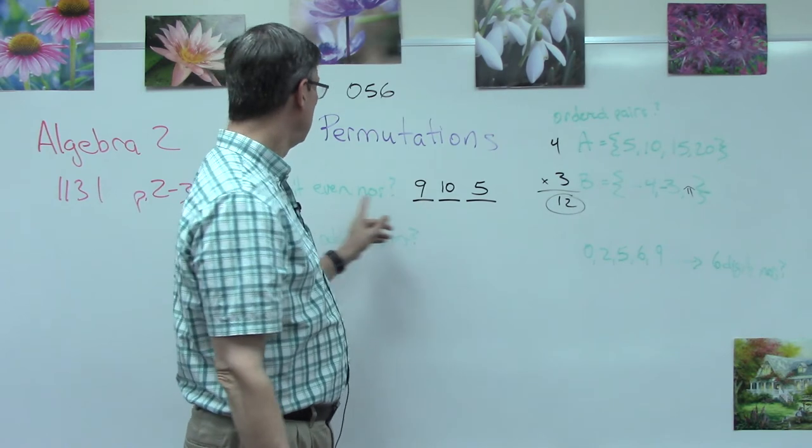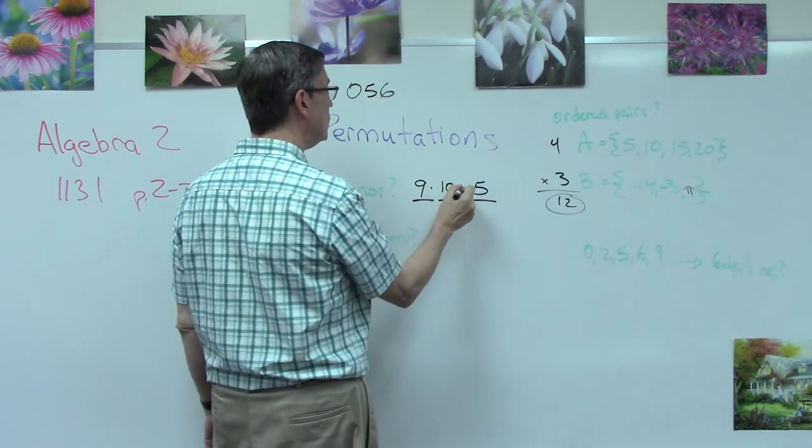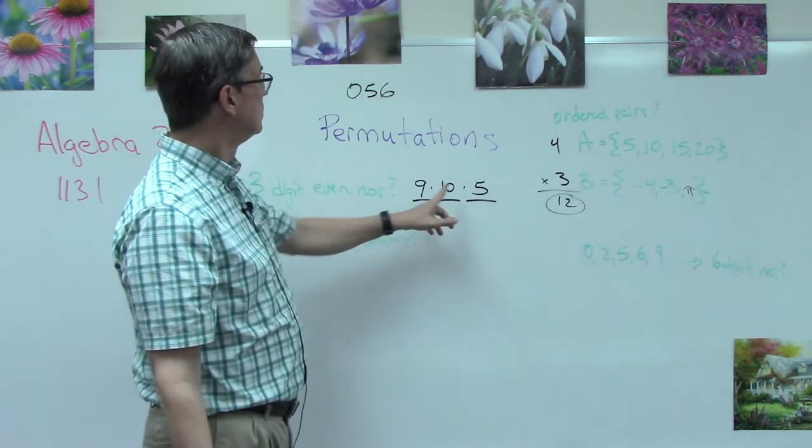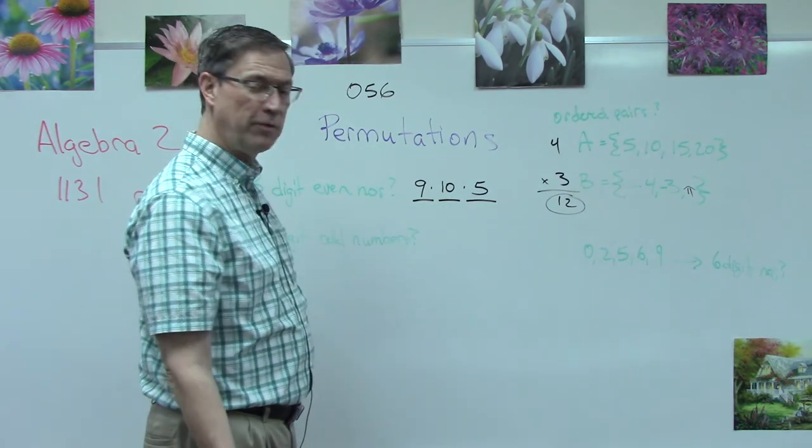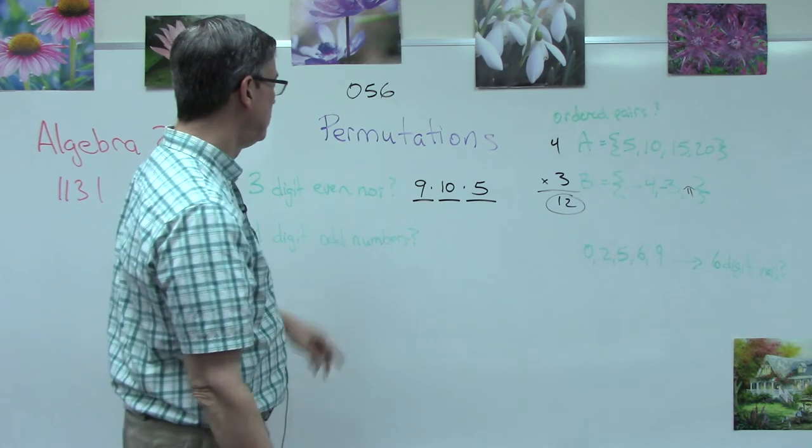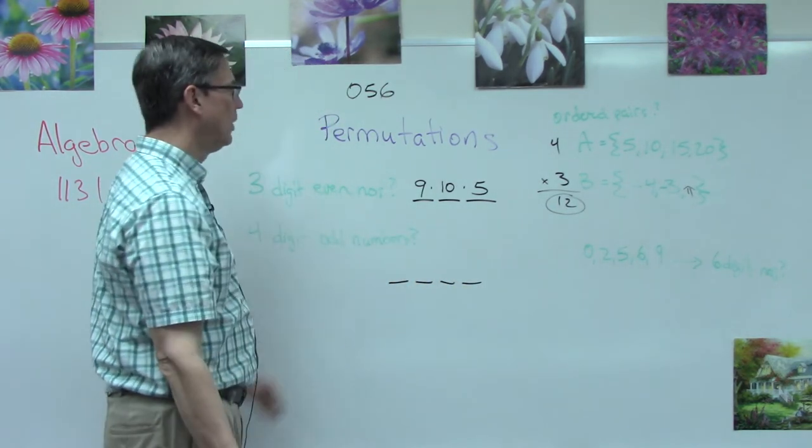So then to figure out how many three-digit even numbers exist, we would need to multiply those three numbers together. So 9 times 10 times 5 equals 450. How about four-digit odd numbers? One two three four, similar idea.